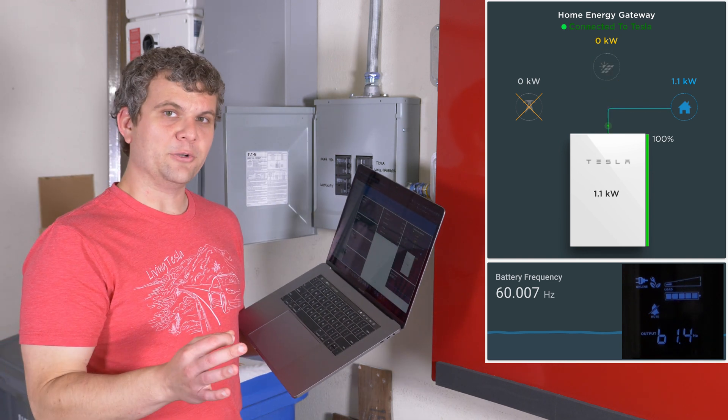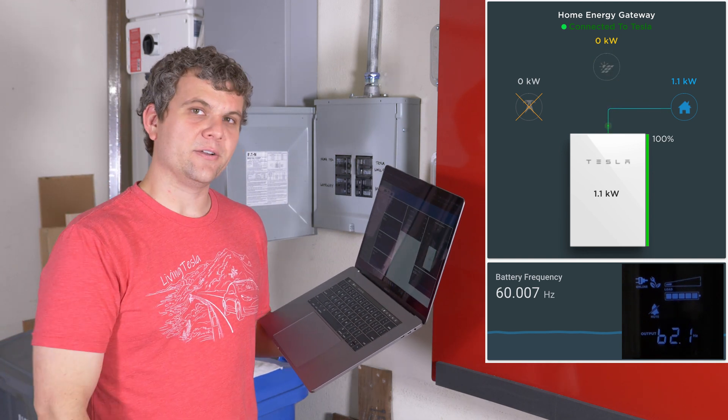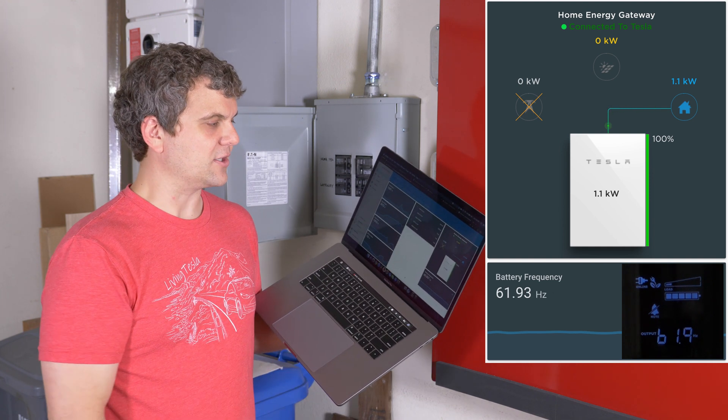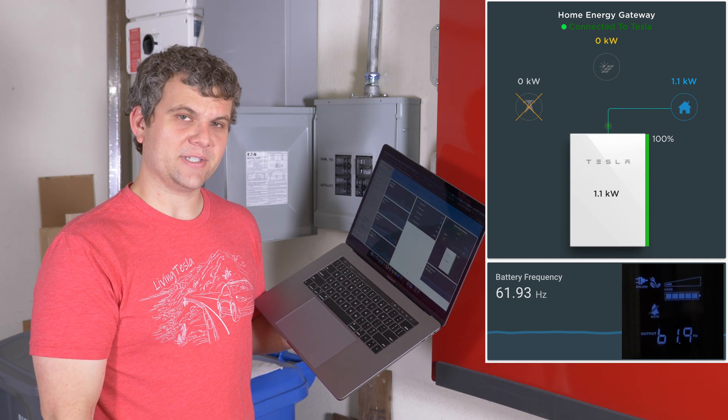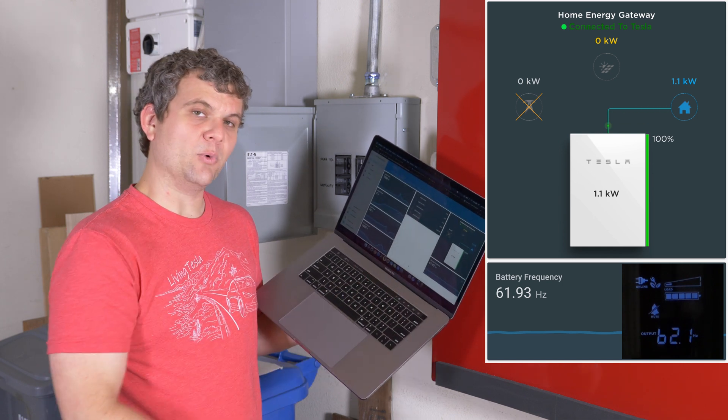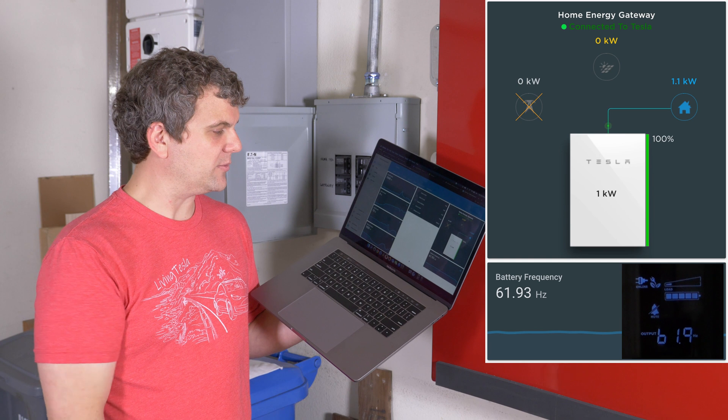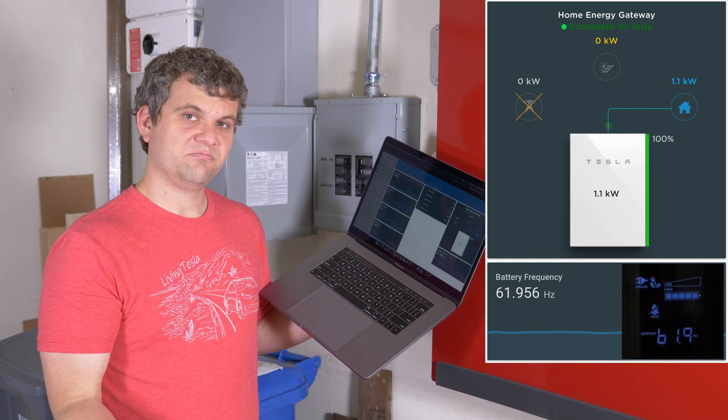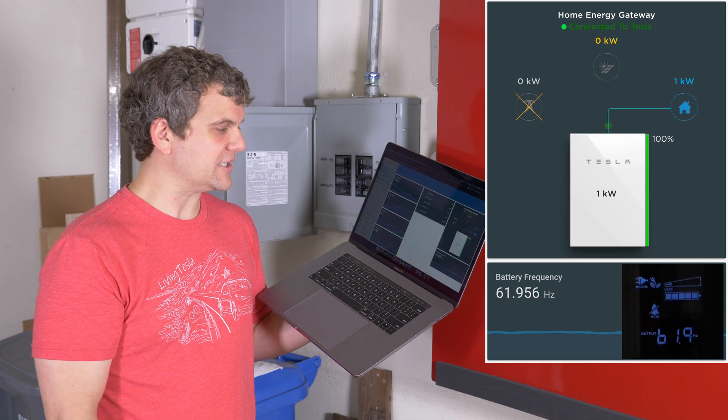So, we saw a little flash. I hear the inverter shutting down. Here on the display, solar is now at 0 kilowatts. Battery frequency is 61.93. It'll probably be 62 the next time it updates here. So that's it. 62 hertz instead of 65.